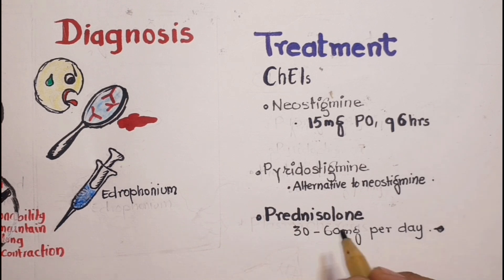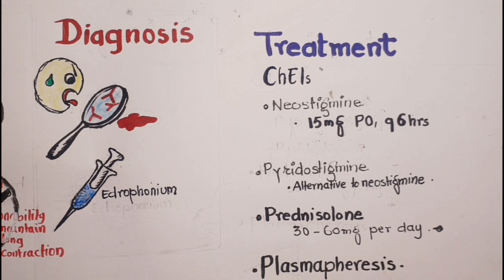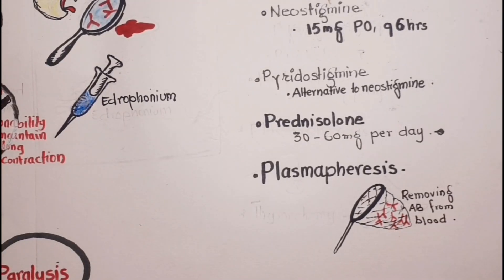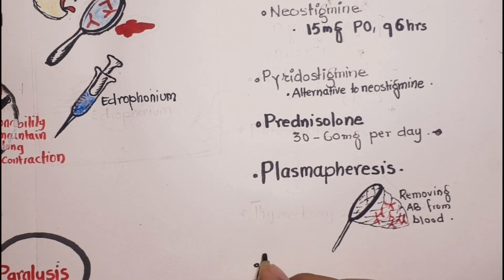Another technique called plasmapheresis is used to remove antibodies from the blood but cannot prevent the production of antibodies by the immune system. The patients must go for repeated sessions of this treatment.